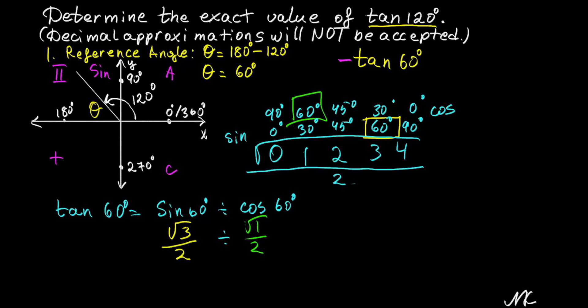In order to divide fractions, we keep first item as is, we have radical 3 out of 2, change division into multiplication, and flip the second fraction, so we get 2 out of 1. The square root of 1 is equal to 1, so I simplified it.